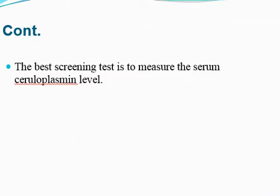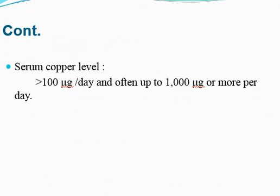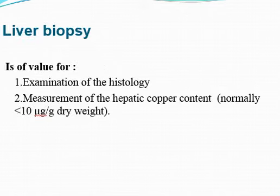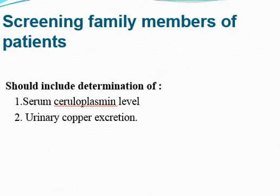The best screening test is to measure the serum ceruloplasmin level. Serum copper level is more than 100 micrograms per day and often up to 1000 micrograms or more per day. The most important diagnostic test is liver biopsy, though it is an invasive procedure — it involves histology and measurement of hepatic copper content, which is normally less than 10 micrograms per kg dry weight. Screening for family members includes serum ceruloplasmin level and urinary copper excretion, since this is an autosomal recessive disorder with healthy carrier states.